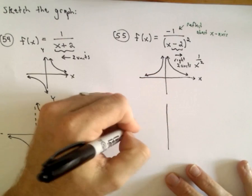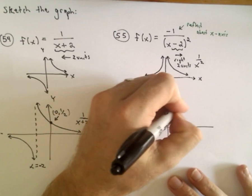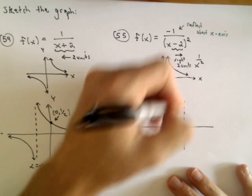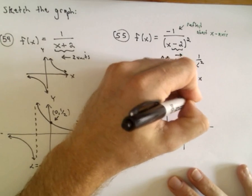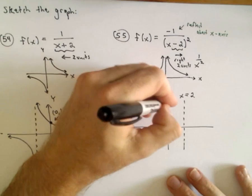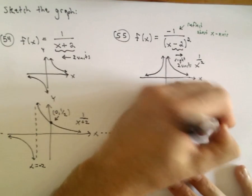So, I think we can do this all in one fell swoop. So, we'll move it to the right 2 units. So, there's the vertical asymptote of x equals 2, y-axis, x-axis.